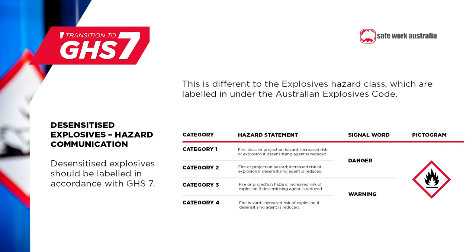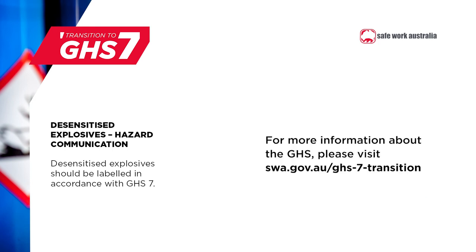All desensitised explosives need the flame pictogram. Desensitised explosives of Category 1 or 2 will need the signal word 'danger,' while desensitised explosives of Category 3 or 4 need the signal word 'warning.' The hazard statements for desensitised explosives are displayed on the screen now. If you manufacture or import desensitised explosives, you'll need to ensure these products are classified, labelled and have safety data sheets prepared in accordance with GHS7. More information about these changes is available in the fact sheets on our website.